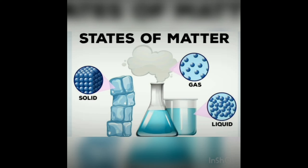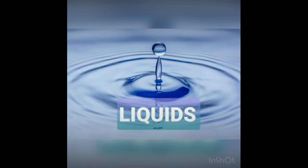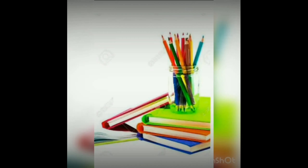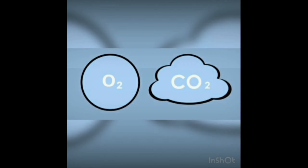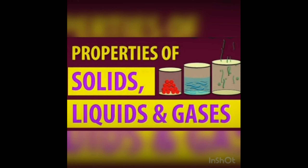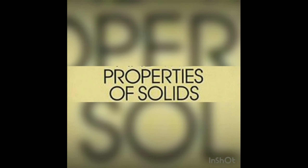States of matter: matter exists in three different states — solids, liquids, and gases. Book and pen are examples of solids; petrol and water are examples of liquids; oxygen and carbon dioxide are examples of gases. Now let us learn the properties of solids, liquids, and gases.